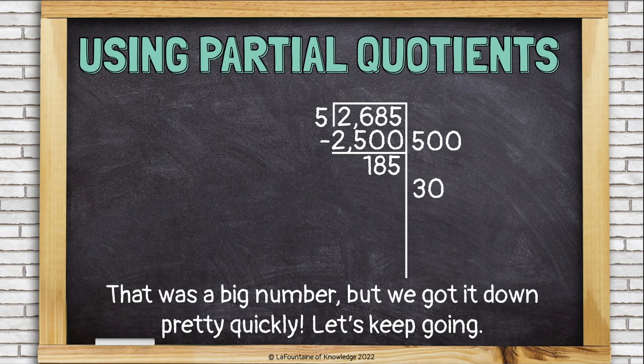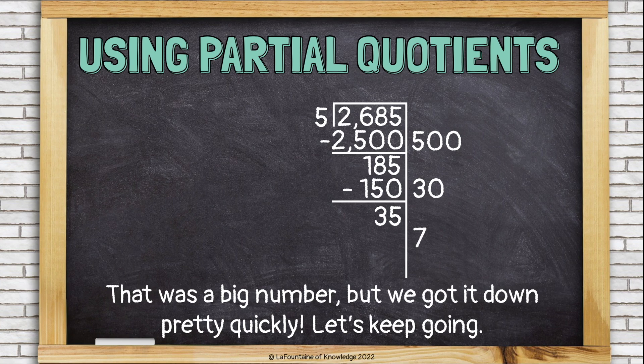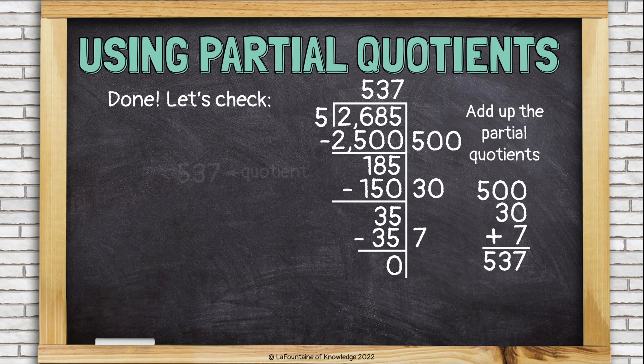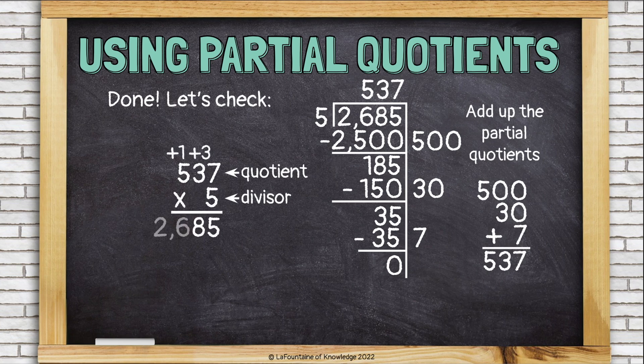Let's keep going. Now we're going to take away, how about 30 groups of 5, because that's 150, and that leaves me with 35. Oh, 7. 5 times 7 is 35. Let's take away 7 groups of 5, and I'm down to 0. Finally, add up your partial quotients to get the answer, 537. And then it's always a good idea to check your answer by multiplying it by the divisor to see if you get your dividend. And we did. We have the correct answer.